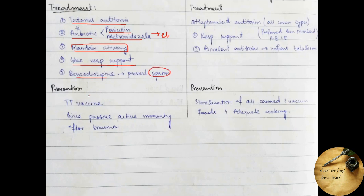The treatment of Clostridium botulinum is to give heptavalent antitoxin which consists of all seven types of antitoxin. This is preferred to the trivalent which consists of only A, B, and E antigenic antitoxin. Supportive treatment like respiratory support. You can also give bivalent antitoxin which is given for infant botulism.